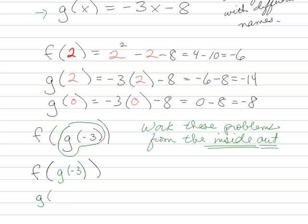So I'll start at g of negative 3. So I've got minus 3. Where I see an x, I'm going to put a negative 3 minus 8. So I've got 9 minus 8 is 1, I think. Yes, got it. I can do this. So g of negative 3 is 1.